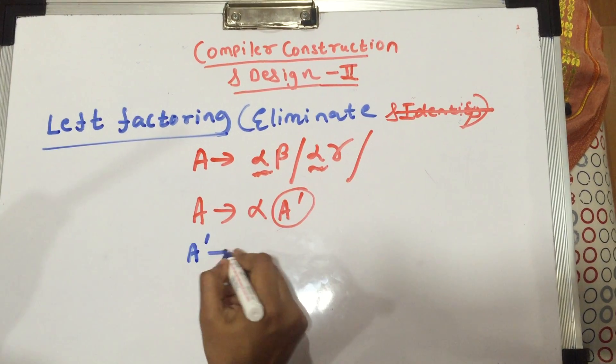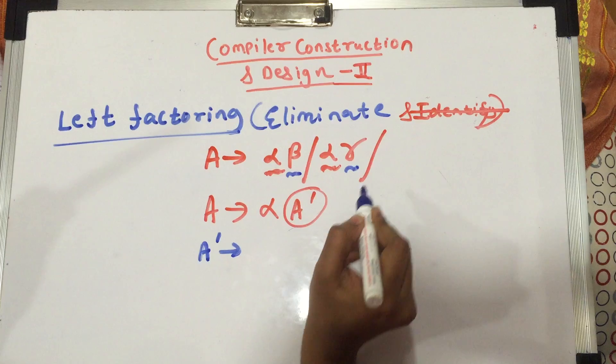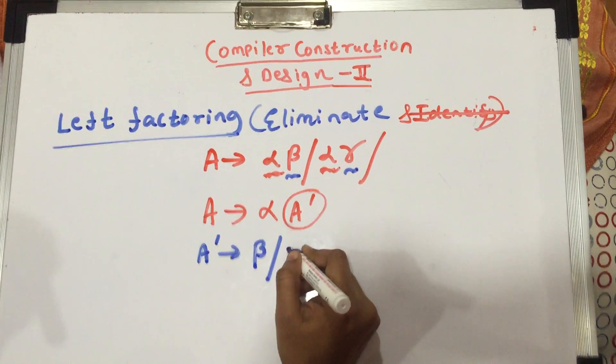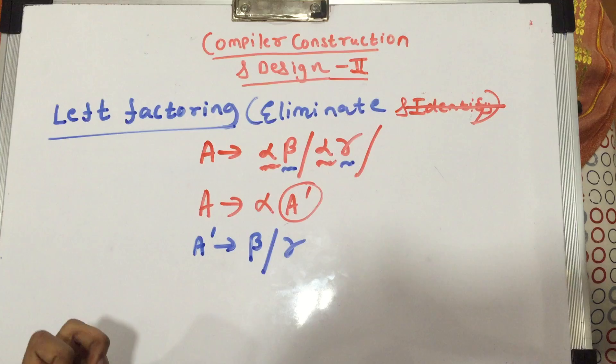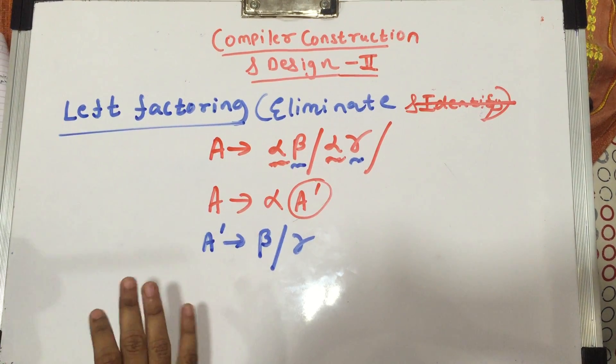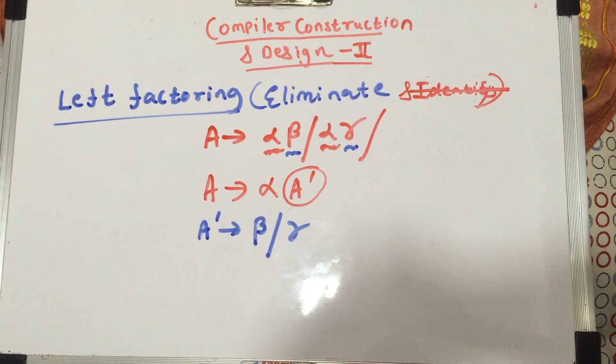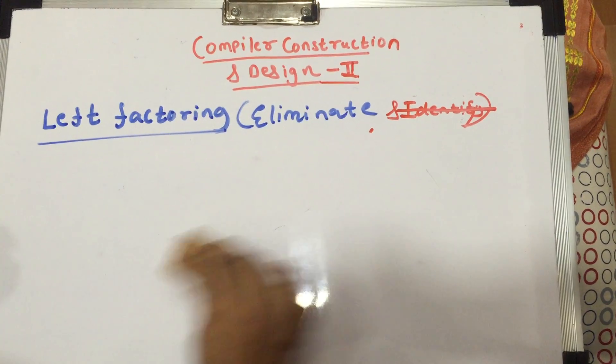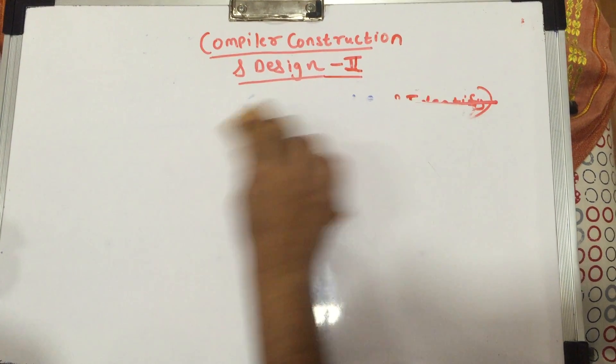A dash is whatever part is left after taking out alpha common, that is beta and gamma. So this is a very easy rule guys, and we're going to see how we can do it. Just one example would be enough to clear this.